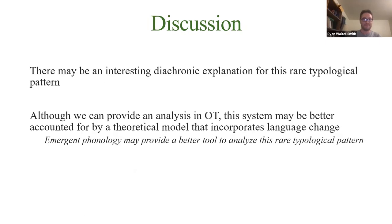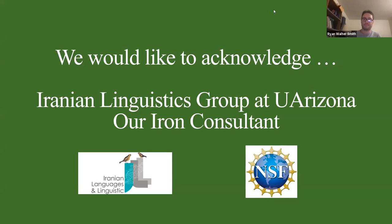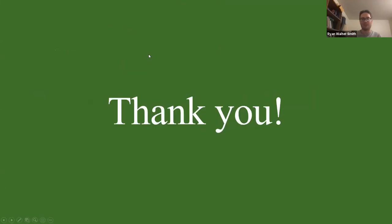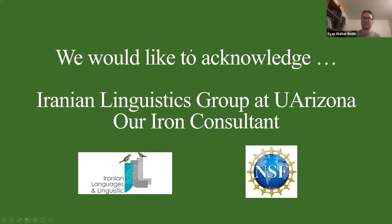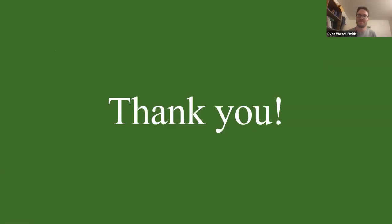In conclusion, Iron Ossetian stress is sensitive to onset complexity and nucleus quality but not coda properties — a challenge for previous work, which can account for onset presence affecting weight but not for complex onsets counting while simplex onsets do not. This motivates an extension of proposed typologies with constraints assigning moraic structure to complex onsets but not simplex ones. A diachronic perspective may help explain how such systems arise. Thanks to the research group and consultant Valerio Zusati.